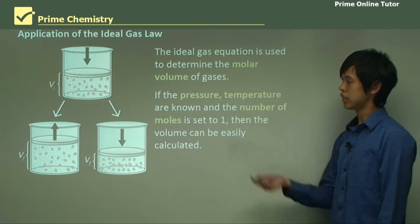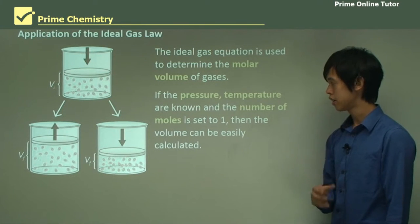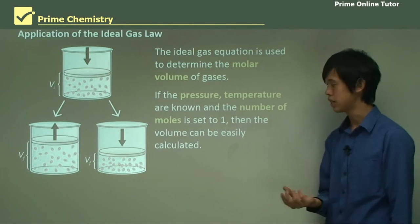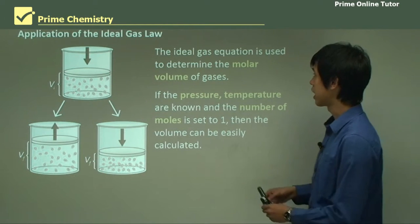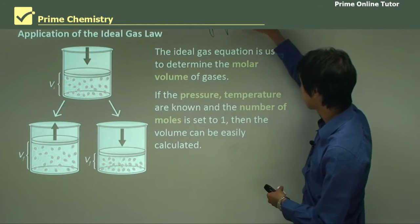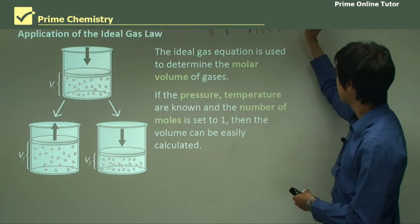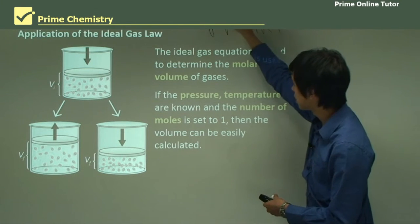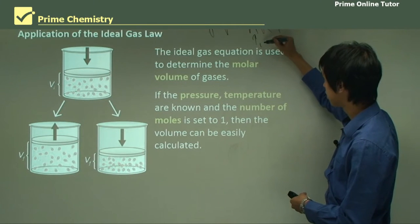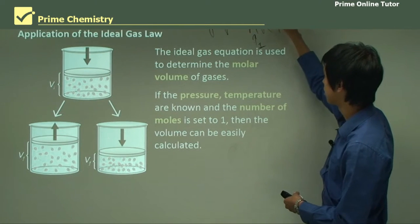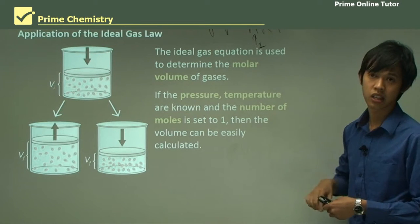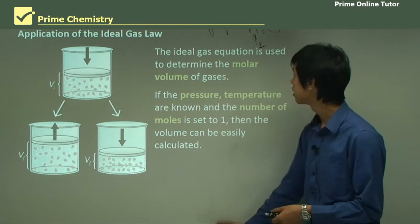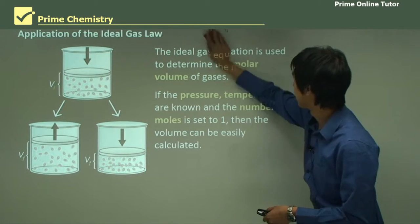So, how do we calculate the molar volume? Well, if the pressure and temperature are known, and the number of moles is set to one, then the volume can be easily calculated. Because it's just PV = nRT. So if we know this one and we know this one, and we're saying this equals 1, and we also know this guy, so we know everything in this equation, so we can easily calculate V.